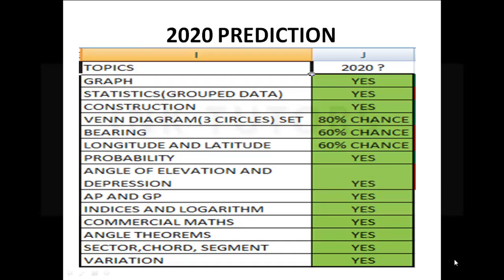Here is our 2020 WAEC prediction summary: graph — coming out for certain; statistics — didn't show last year so it's coming; construction — yes, it's coming; Venn diagram — 80 to 90% chance; bearing and longitude — 60% chance; probability — yes, coming; angle of elevation — coming; AP and GP, indices and logarithm, commercial math, angle theorems, sector, segment, and variations are all questions you're going to be writing.